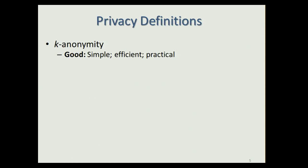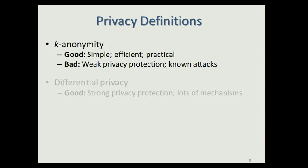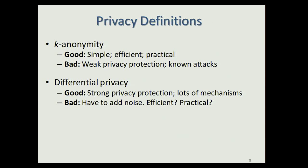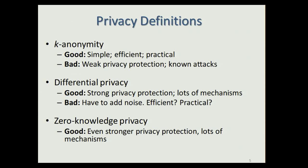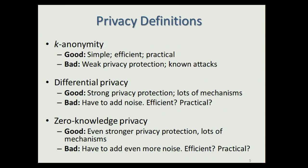K-anonymity is good in that it's simple, efficient, and practical. However, it only provides weak privacy protection and there are known attacks against it. Differential privacy is good in that it provides strong privacy protection and there are many mechanisms for it. However, one has to add noise and it's not clear how efficient and practical differentially private mechanisms are. Zero-knowledge privacy provides even stronger protection and there are mechanisms for it, but one has to add even more noise, making it even less clear whether such mechanisms can be efficient and practical.